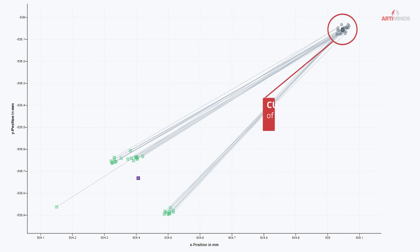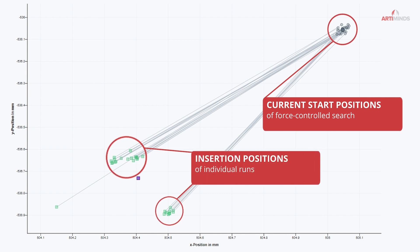The points in grey show the current start positions of the force-controlled search, while the points in green show the results of the individual searches. That is, the positions where the robot successfully conducted the respective insertion.